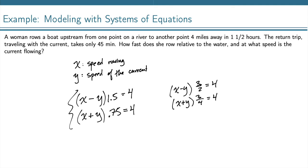Now I'm going to multiply this first equation by 2 to get rid of that fraction, which gives me 3 times x minus y equals 8. Multiplying this second equation by 4 gives me 3 times x plus y equals 16.